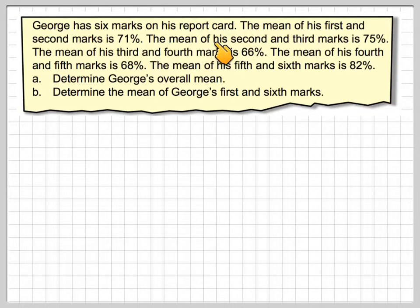George has 6 marks on his report card. The mean of the 1st and 2nd marks is 71%, the mean of the 2nd and 3rd marks is 75%, the mean of his 3rd and 4th marks is 66%, the mean of his 4th and 5th marks is 68%, and the mean of his 5th and 6th marks is 82%. Determine George's overall mean. Determine the mean of George's 1st and 6th marks.